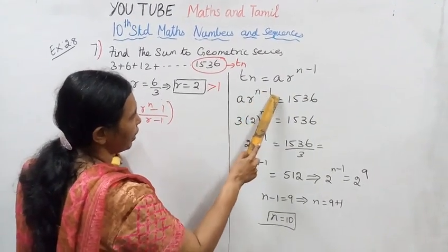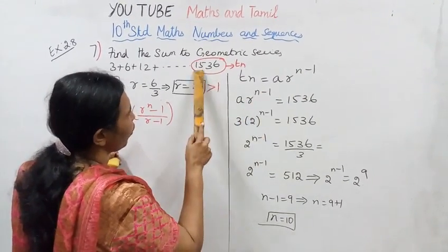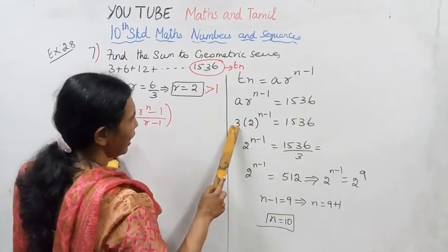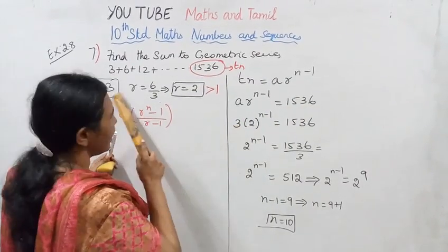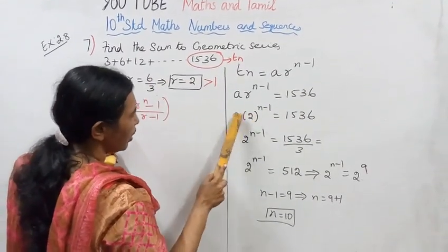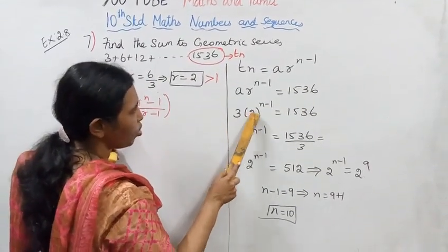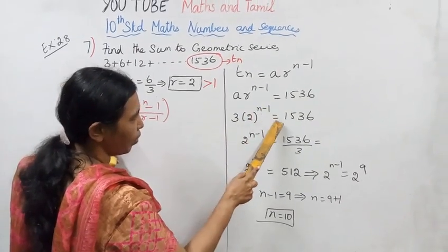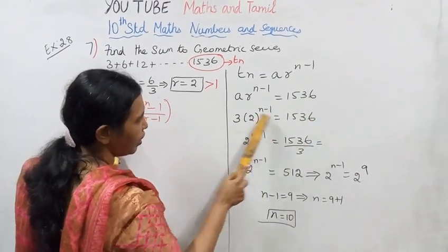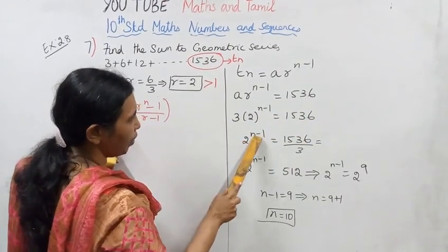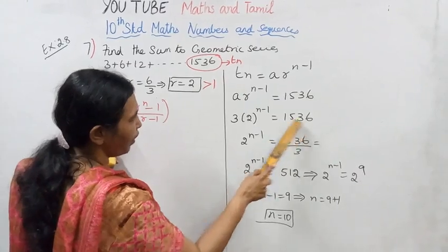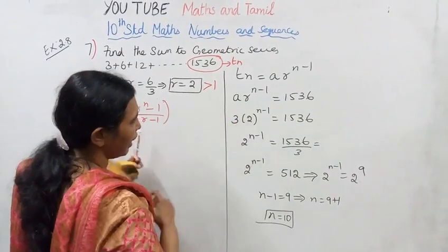So r^(n-1) times... the last term is 1536. With a equals 3 and r equals 2, we write: 3 into 2^(n-1) equals 1536. So 2^(n-1) equals 1536 — this is where we start solving.